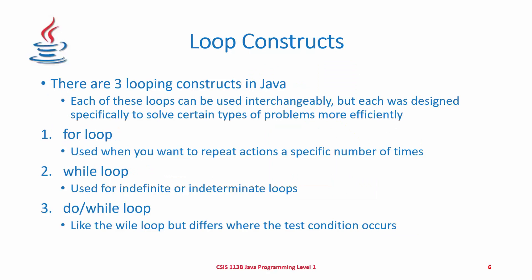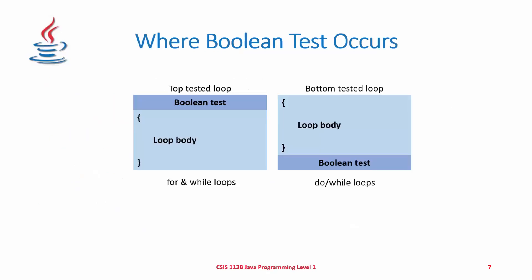There are three loop constructs in Java. Each one can be used interchangeably, but each was designed to solve certain types of problems more efficiently. We have a for loop, used when we want to repeat actions a specific number of times. A while loop, used for indefinite or indeterminate loops. And a do-while loop, which is like the while loop but differs in where the test condition occurs — in the while loop the test is at the top before the statements, and in the do-while the test is at the bottom.